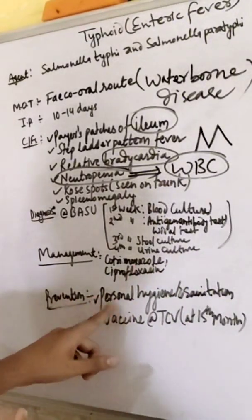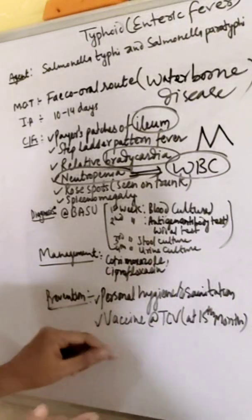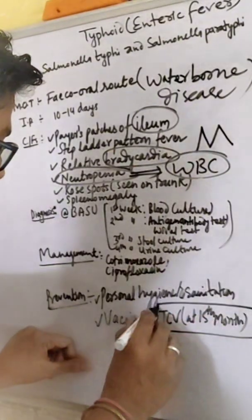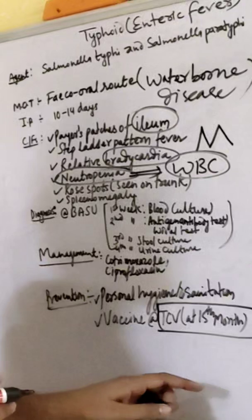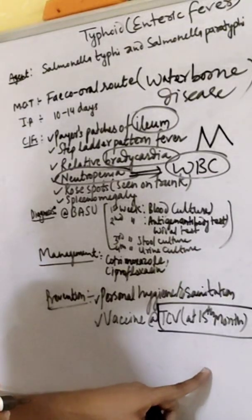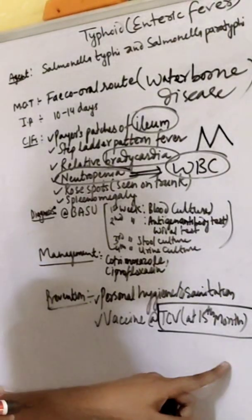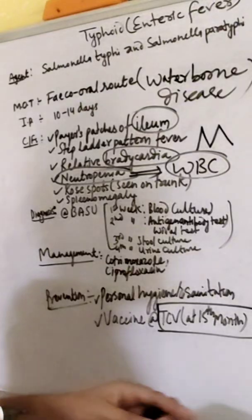Prevention: personal hygiene and sanitation, and vaccines. The Government of Nepal is providing typhoid conjugated vaccine to children at fifteen months. Thank you so much.